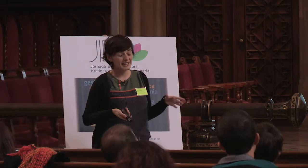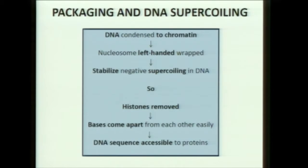The canonical nucleosome is a very well-characterized molecule. It is formed by 146 base pairs of DNA that wrap in a left-handed manner around an octamer of histones.